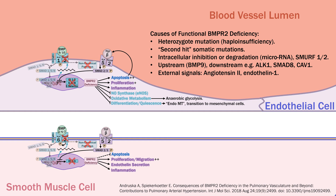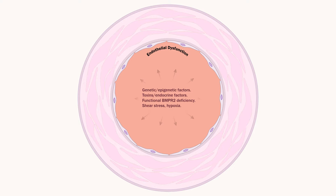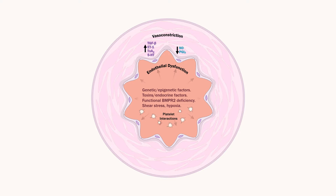Looking at the broader process: an initiating event — genetic or epigenetic factors, vascular stimuli including drugs, hormones, shear stress, or hypoxia — leads through the common pathway of functional BMPR2 deficiency and dysfunctional endothelium to smooth muscle contraction via altered vasoactive inflammatory mediators and platelet interactions.